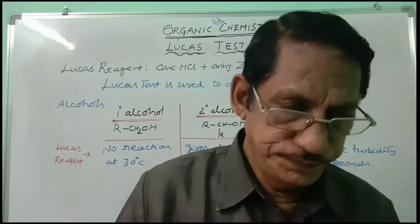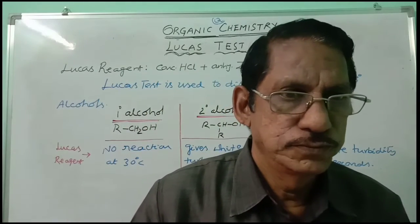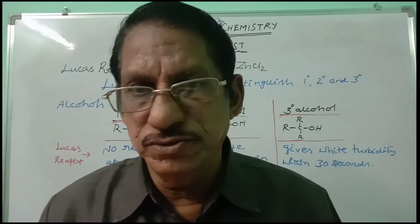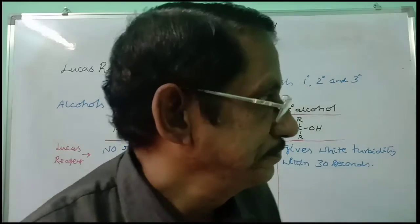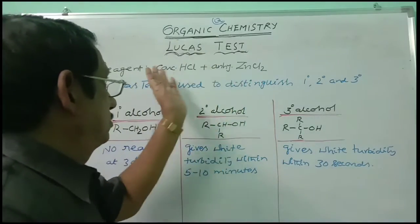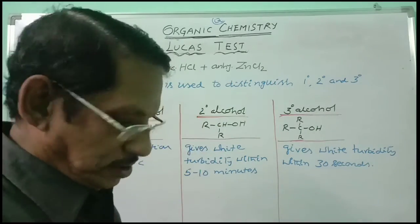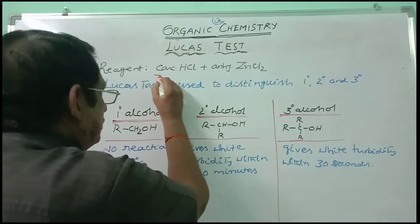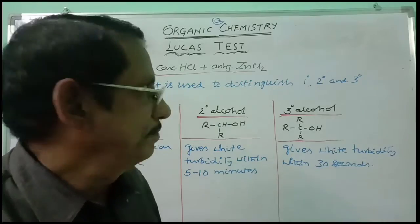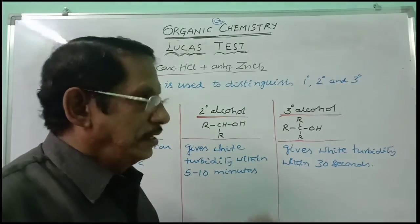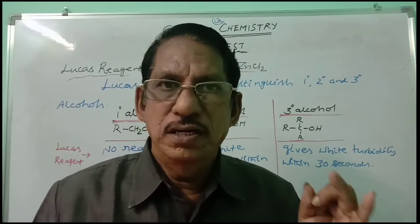Dear students, in this class we will discuss the important test to distinguish alcohols — that is, the Lucas test. The Lucas reagent is a mixture of concentrated HCl and anhydrous zinc chloride. This Lucas reagent is used to distinguish primary, secondary, and tertiary alcohols.